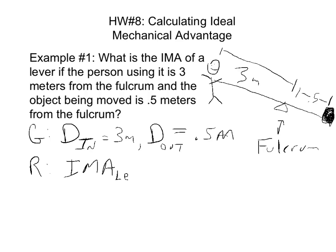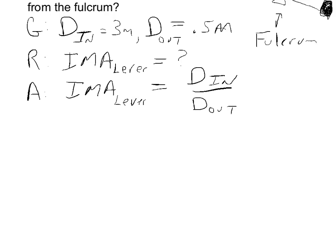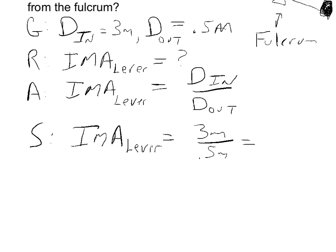What are we solving for? We're looking for the IMA of a lever specifically — try to be as specific as possible because there are four IMA formulas. The IMA of a lever is equal to the distance in, between the force and the fulcrum, divided by the distance out, between the output force and the fulcrum. So the solution: IMA equals 3 meters divided by 0.5 meters. Like mechanical advantage, this is a ratio so the units cancel — meters divided by meters — and 3 divided by 0.5 equals 6.